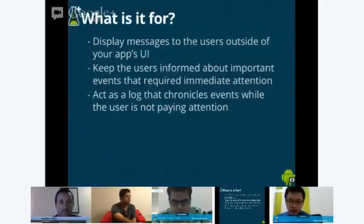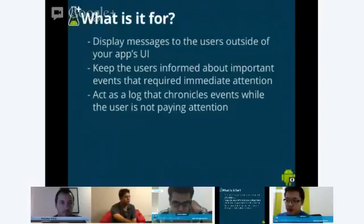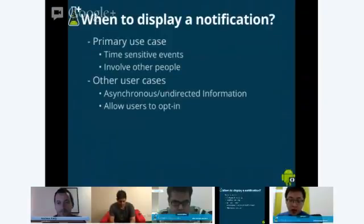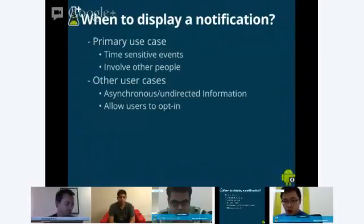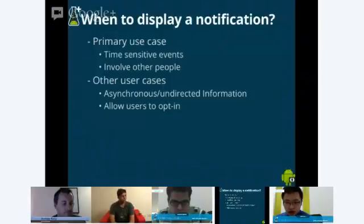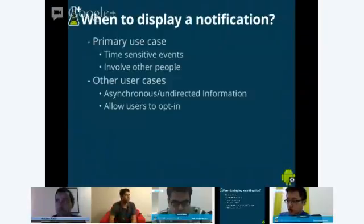Notifications keep the user informed about important events that require immediate attention. Another use case is using notifications as a log in Android — to chronicle events while the user isn't paying attention. When to display notifications: the primary use case is time-sensitive events, and usually these involve other people to the phone owner. Other use cases include asynchronous or undirected information, but in those cases we recommend allowing users to opt in or opt out of that kind of notification.